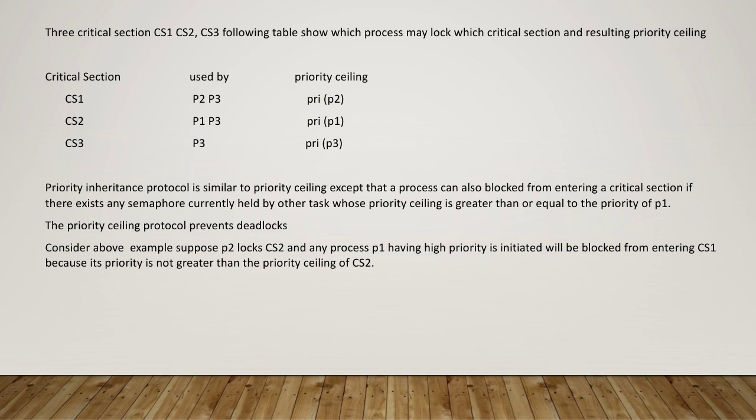Consider the above example: suppose P2 currently locks CS2 and any process P1 having the highest priority is initiated — it will be blocked from entering CS1 because its priority is not greater than the priority ceiling of CS2. Hence, the priority ceiling of a semaphore is the highest priority of any task that may lock it.